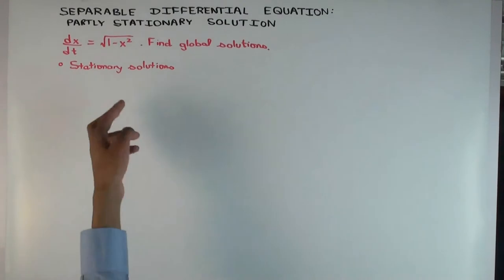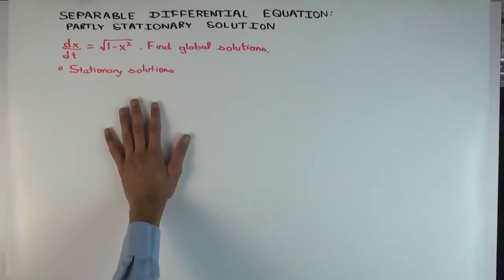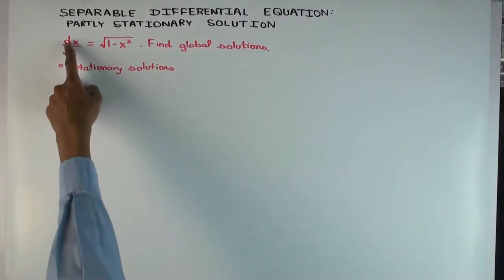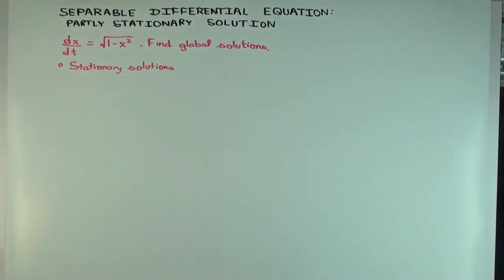This is actually an autonomous differential equation, so I will use the notation for autonomous where the independent variable is denoted t. The equation is dx/dt = √(1 - x²). Let's begin by finding the pure stationary solutions. What are the stationary solutions? That's the ones where it's a constant function.